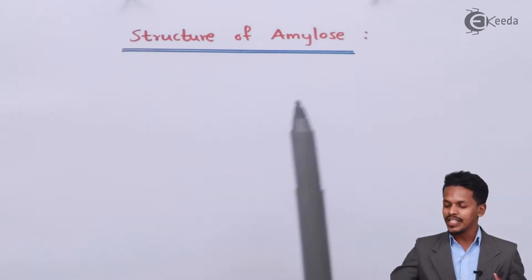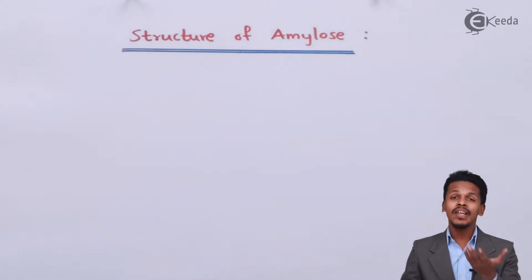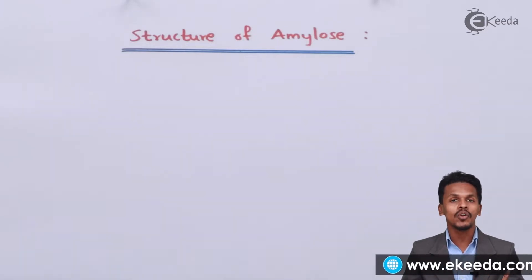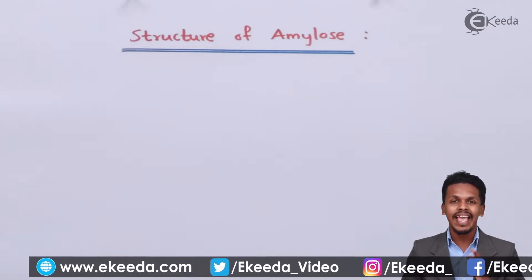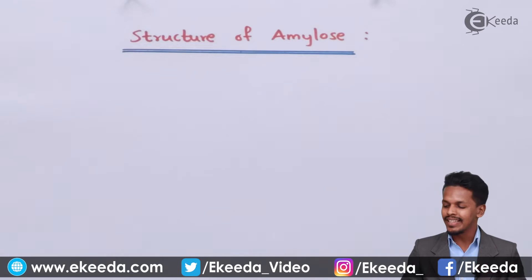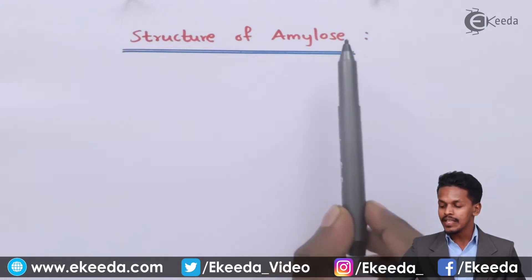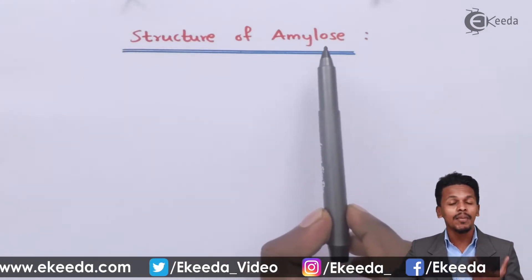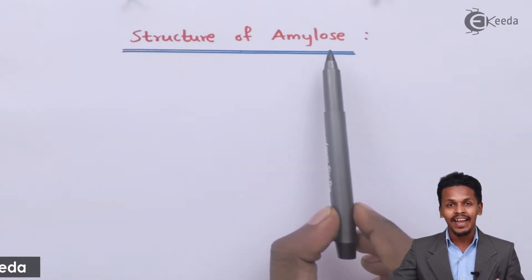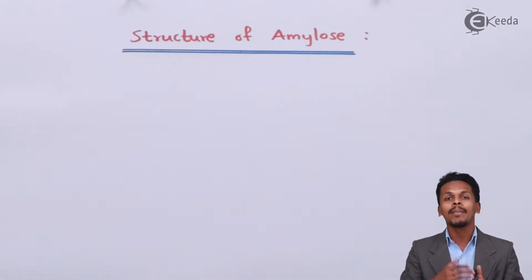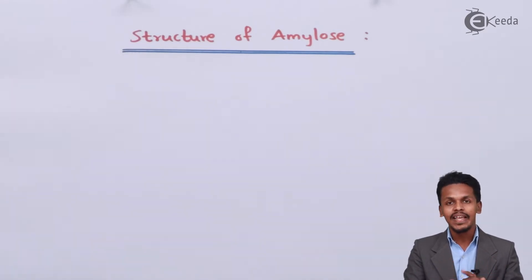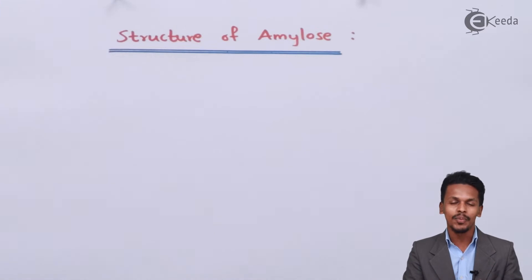Here I'm going to talk about the structure of amylose. As we discussed the structure of maltose, it is formed by the combination of alpha-D-glucopyranose. For amylose also, it is basically a polymer of alpha-D-glucopyranose. This polymer is a component of starch. Starch has two components: amylose and amylopectin, out of which 15 to 20% is made up of amylose, and it is water-soluble.